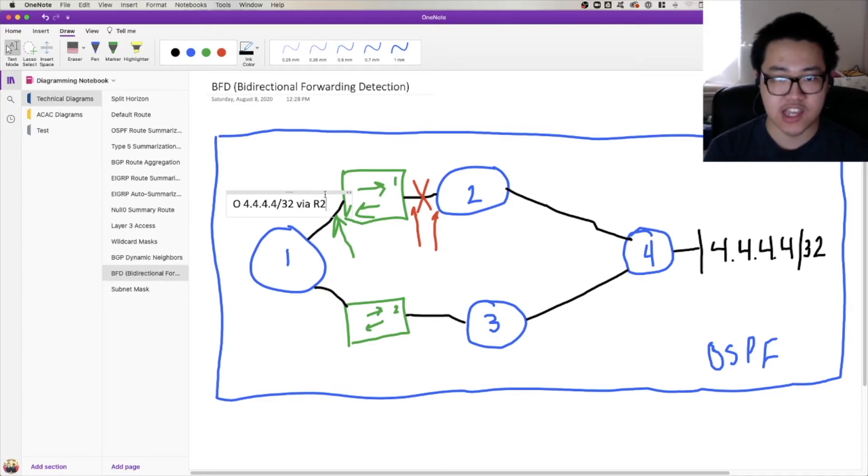BFD will establish a session, a neighborship, and it's going to use that to keep track of whether each are reachable. If it detects that the session is down, it's going to bring that entire session down, and then it's going to report to OSPF saying hey look, I know that you were configured to check with me whether these two routers were reachable, and they're not anymore. So OSPF will kind of preempt the whole timer thing, and then it will bring the adjacency down preemptively, and then it's going to therefore transition the routing table entry for 4444-32 in this case, from going through R2 to going through R3.